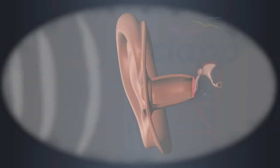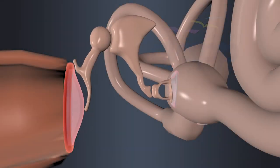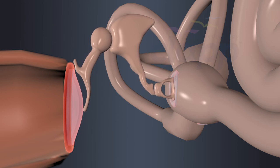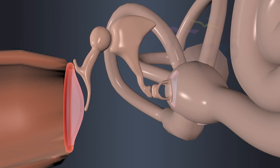When sound waves enter the auditory canal, they strike the tympanum, causing it to vibrate. The vibrations of the tympanum amplify the sound waves and transmit them further into the middle ear.